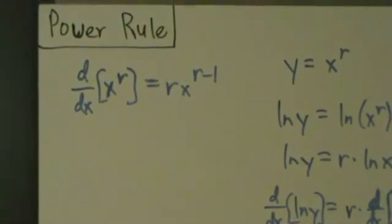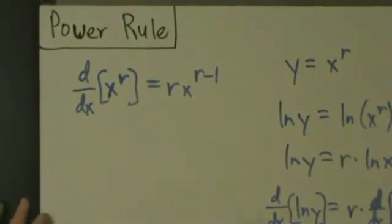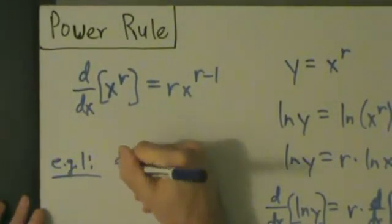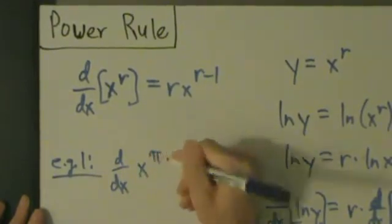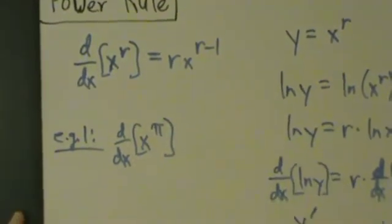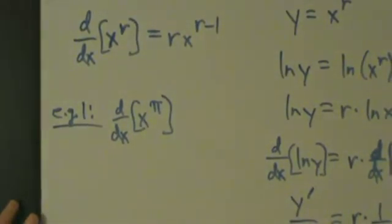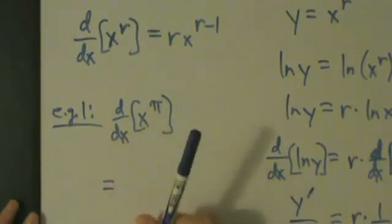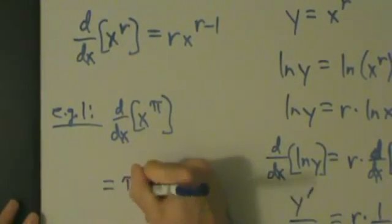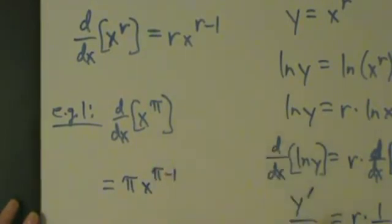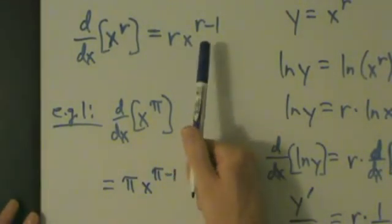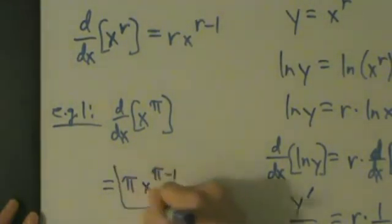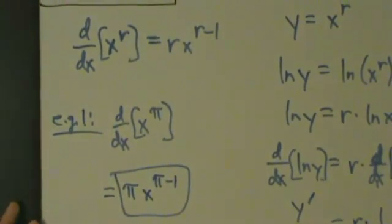So in the next couple of videos, actually let's do a quick example right now. Example 1, let's say we want to find d/dx of x to the pi. So it's a very goofy function, but the idea is still going to be the same. It's just x raised to some constant. So the power rule tells us that that's just going to be pi times x to the pi minus 1. Bring down the exponent and then subtract 1 up here. So pi times x to the pi minus 1 is our answer. And we'll do some more examples in the next couple of videos.